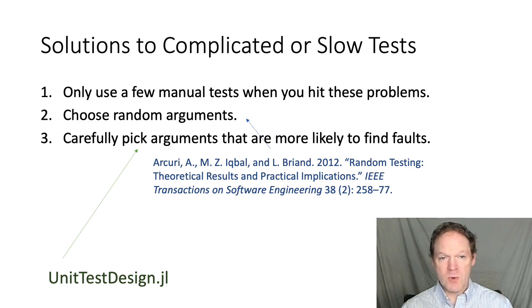Or we could choose random arguments for a few tests. There's a great paper shown here that's basically a love letter to randomized testing. You should read it. I'd like to show you a third method, which uses optimization to carefully choose tests that are most likely to cover all branches.